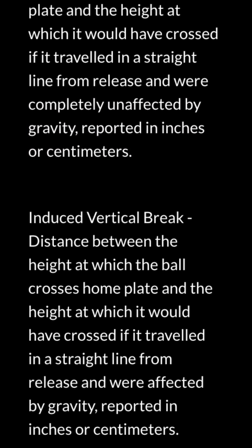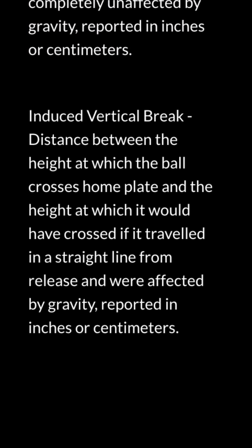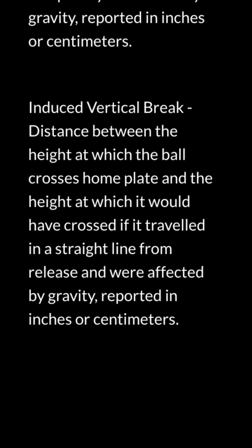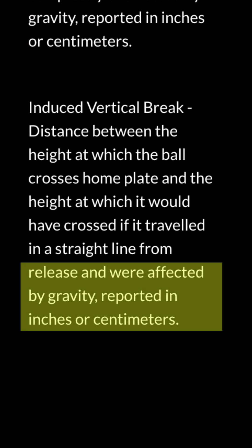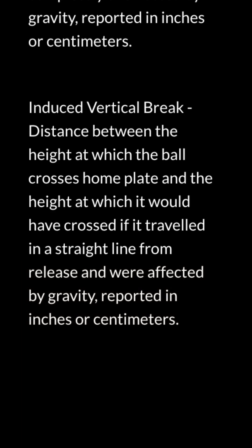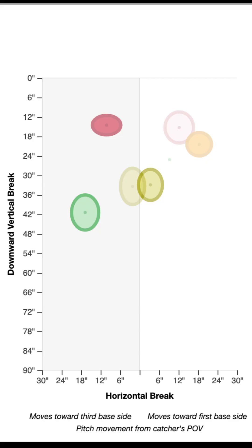Induced Vertical Break takes gravity out of the equation, so it's explaining how many inches the ball would move vertically based on the spin and axis during its flight to home plate. Based on the pitch type, it could be a negative or a positive number. Because of this, two players can have similar vertical breaks with different induced vertical breaks.